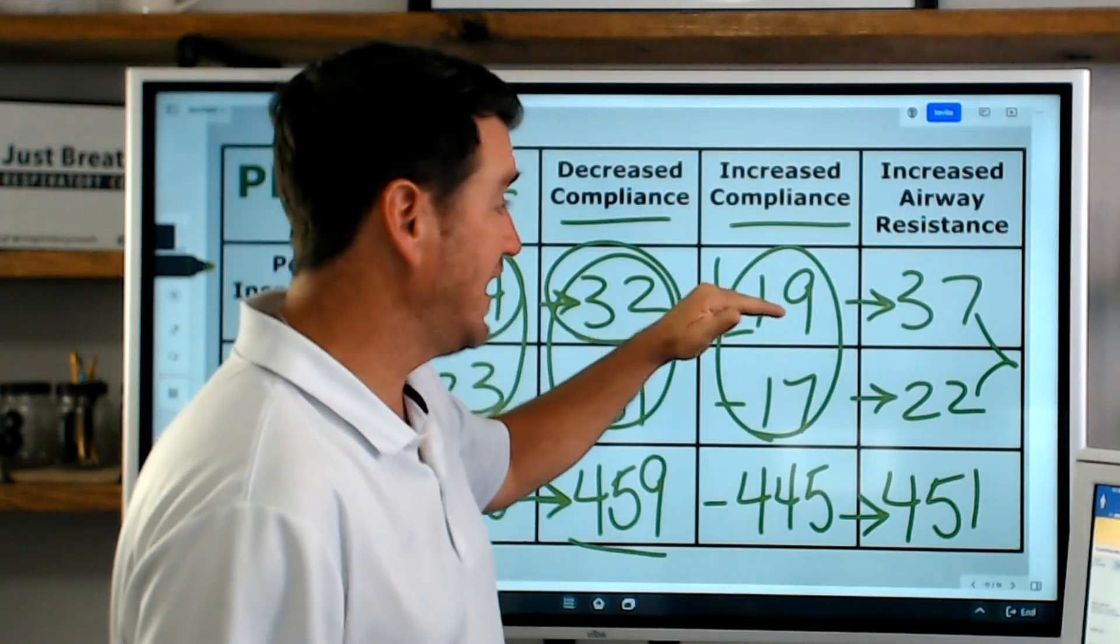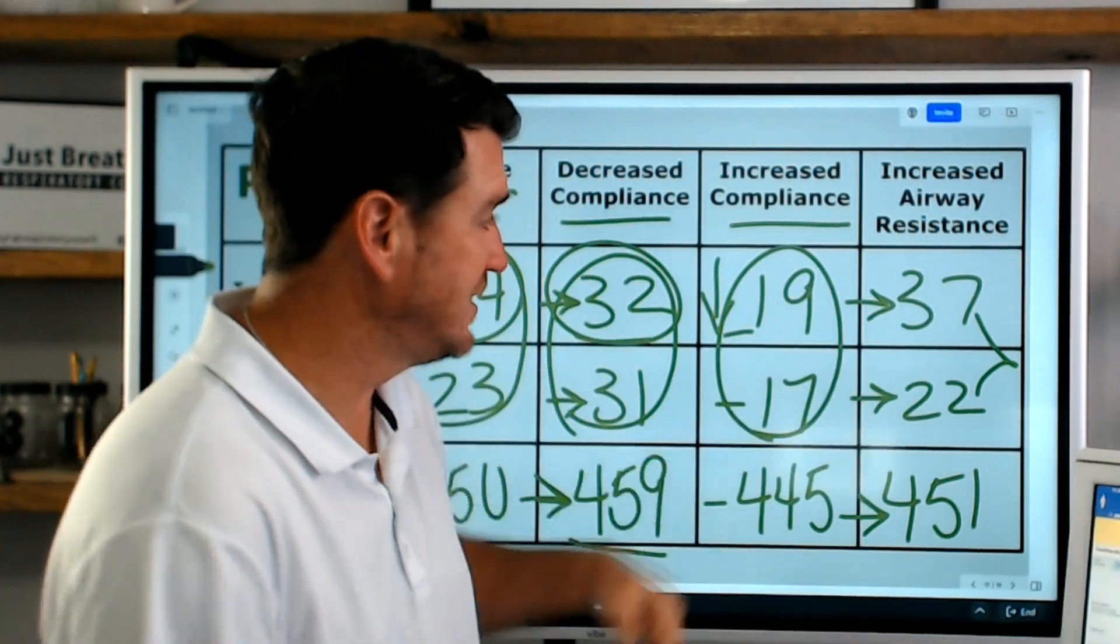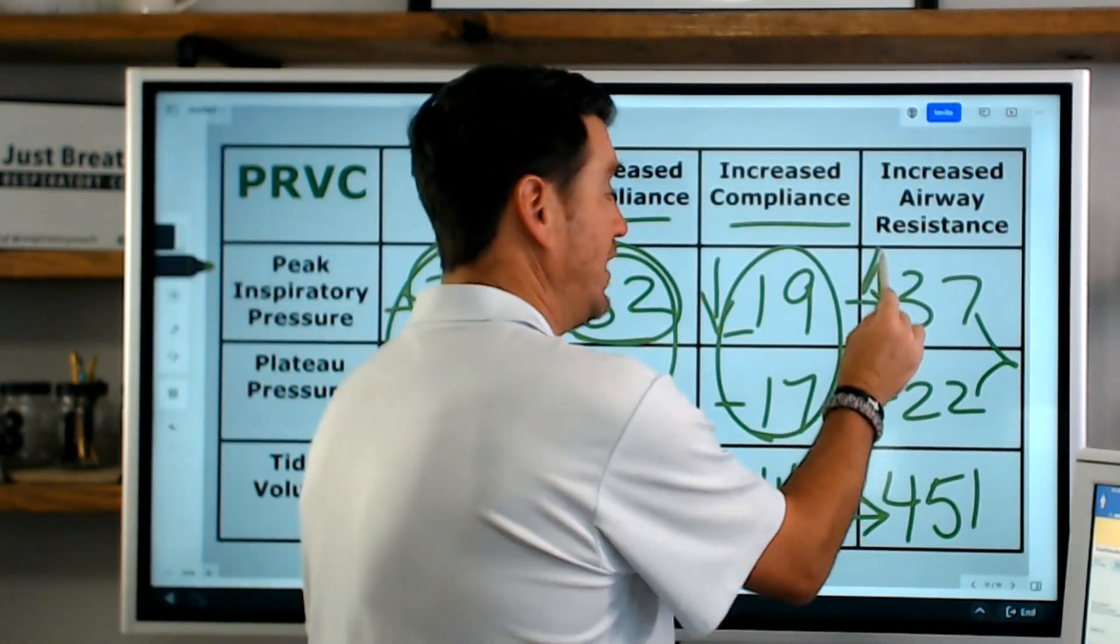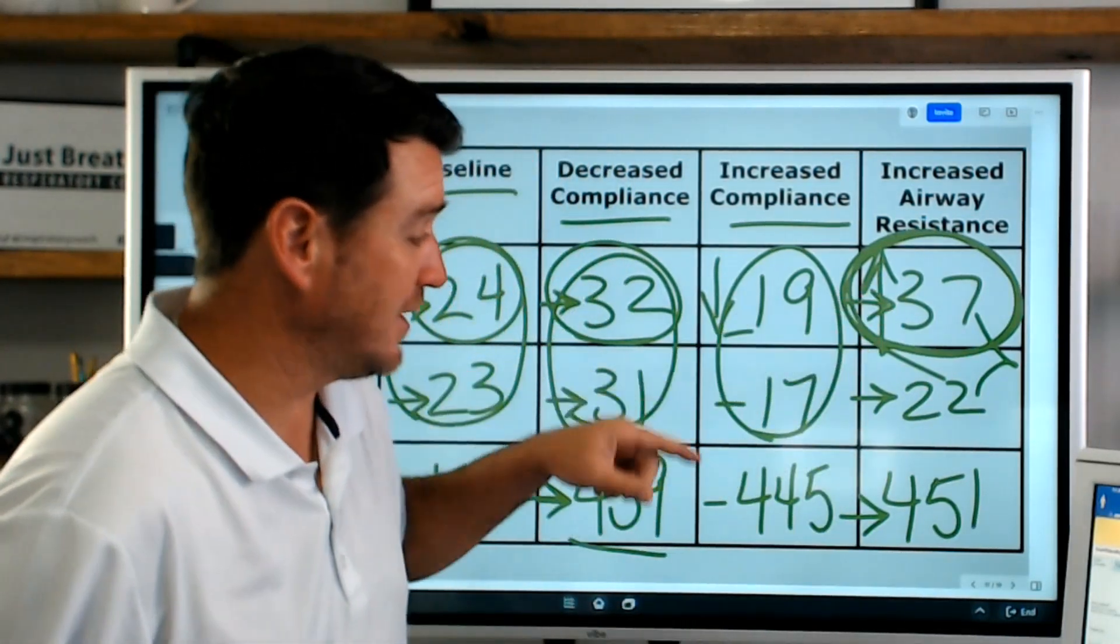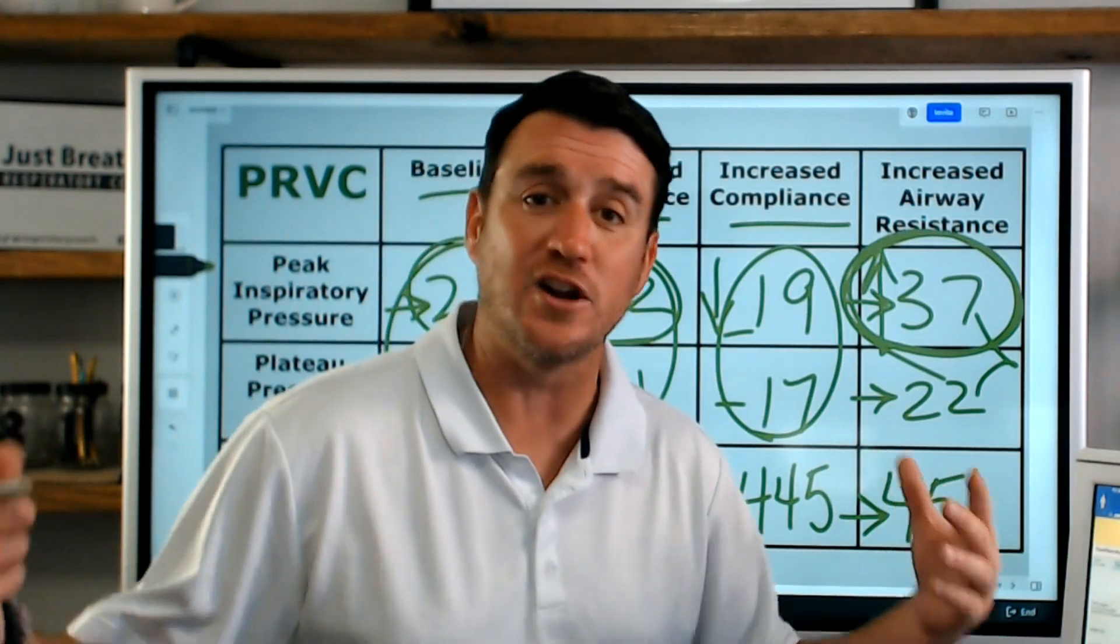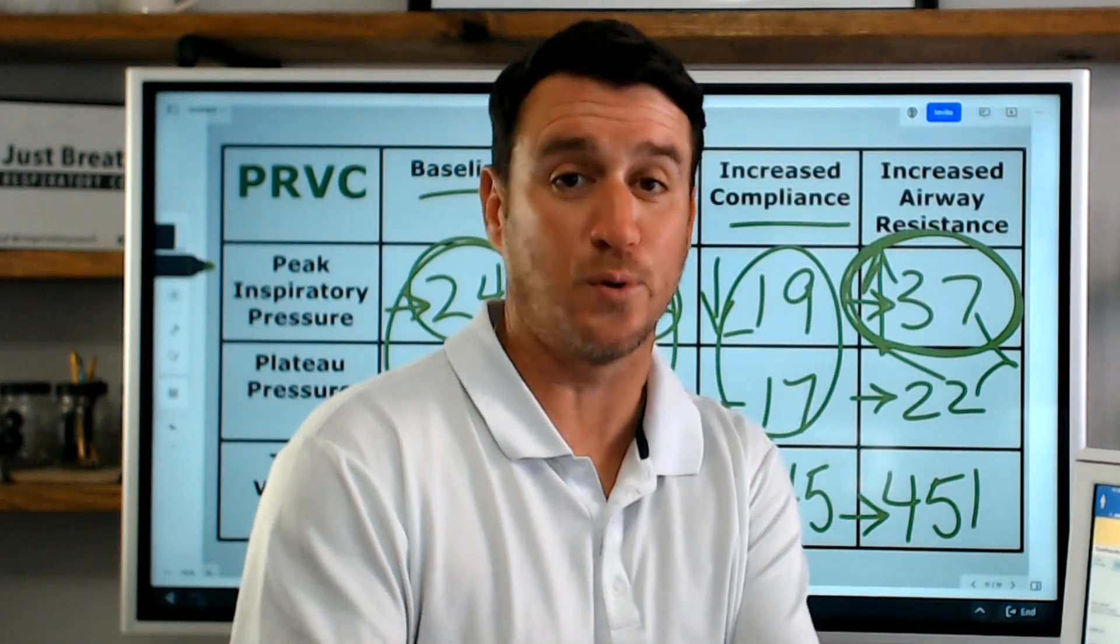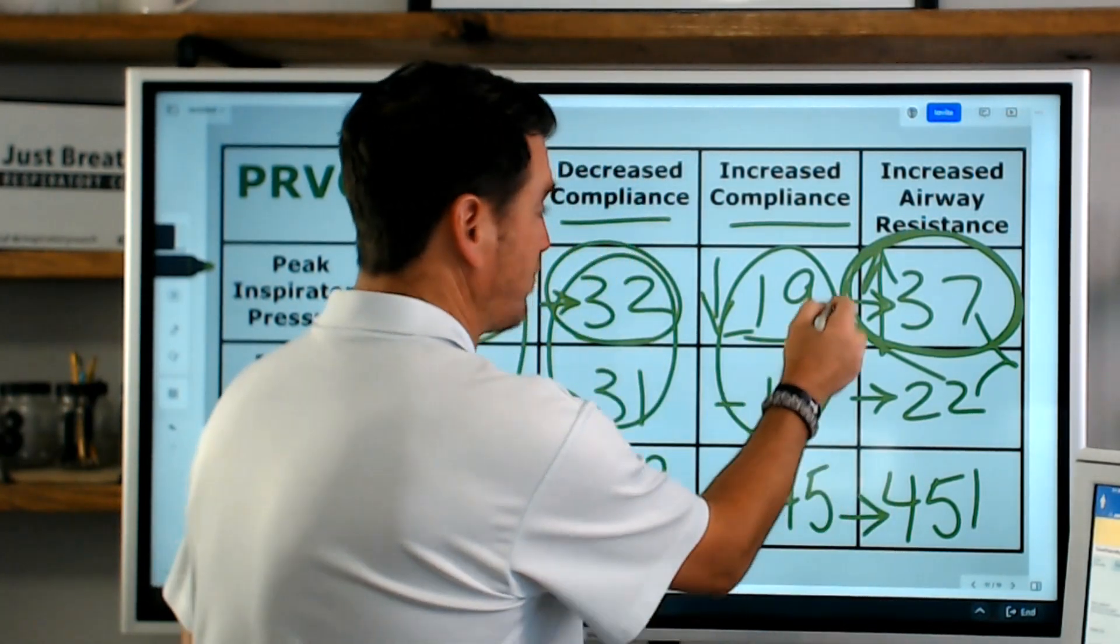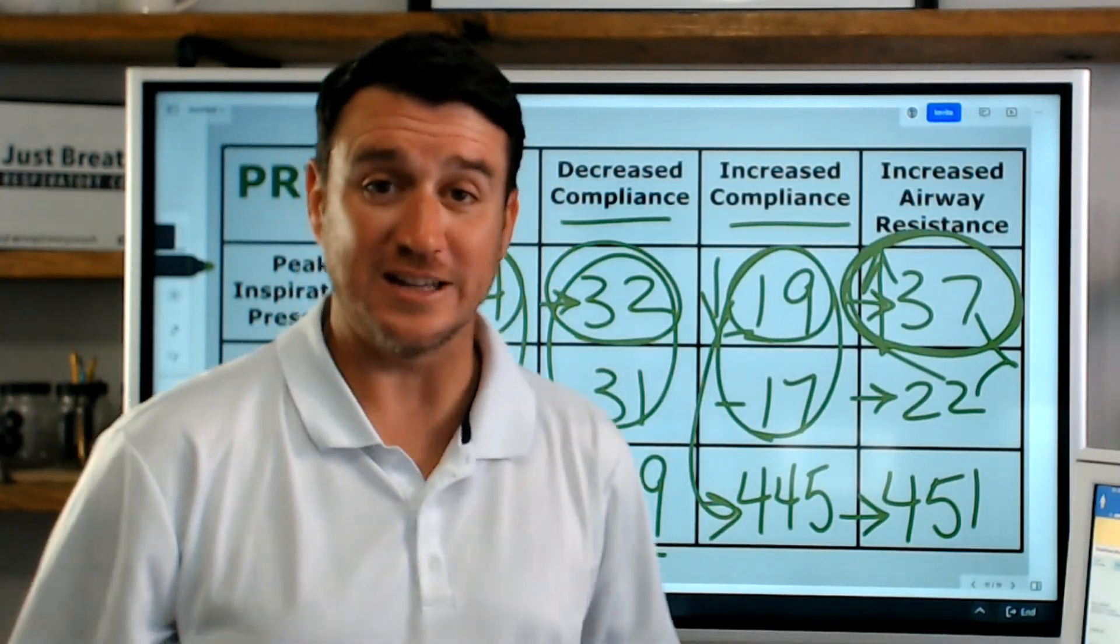The only difference is that in PRVC, the vent is regulating this rise and decrease in pressure. Same thing with airway resistance. How do I know I have an airway resistance problem? Because my pressure increased significantly to establish and to ensure that that 450 was delivered. Well, how do I know my patient's getting better? How do I know when my compliance or my resistance is improving? Well, now you see that it doesn't take as much pressure to achieve the target tidal volume.